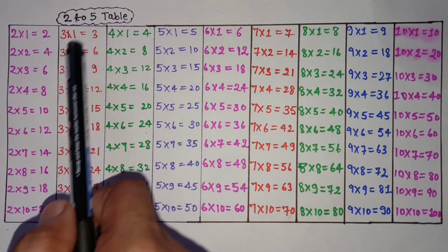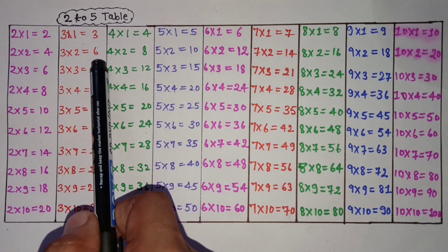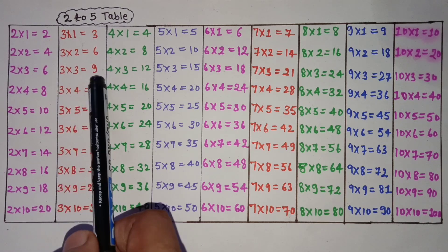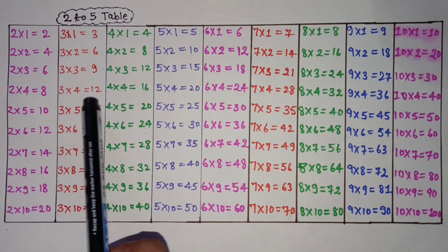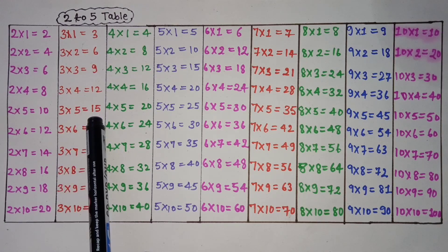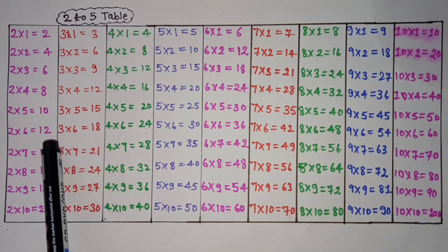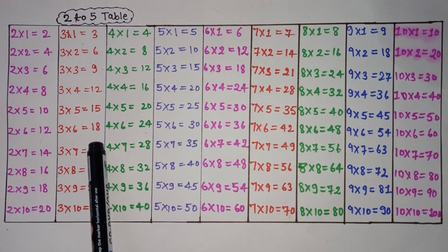3 2 is 6, 3 3 is 9, 3 4 is 12, 3 5 is 15, 3 6 is 18.